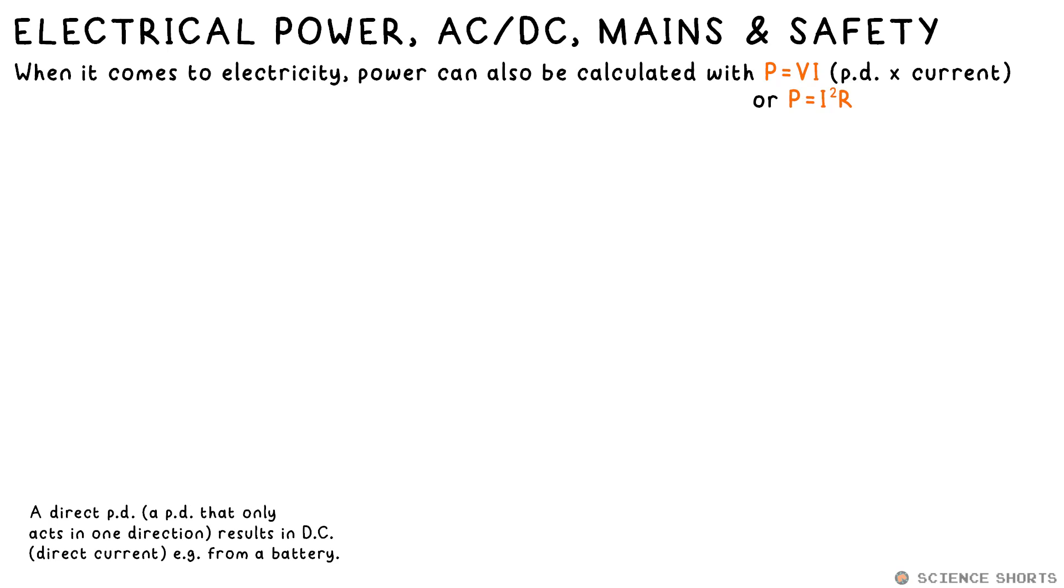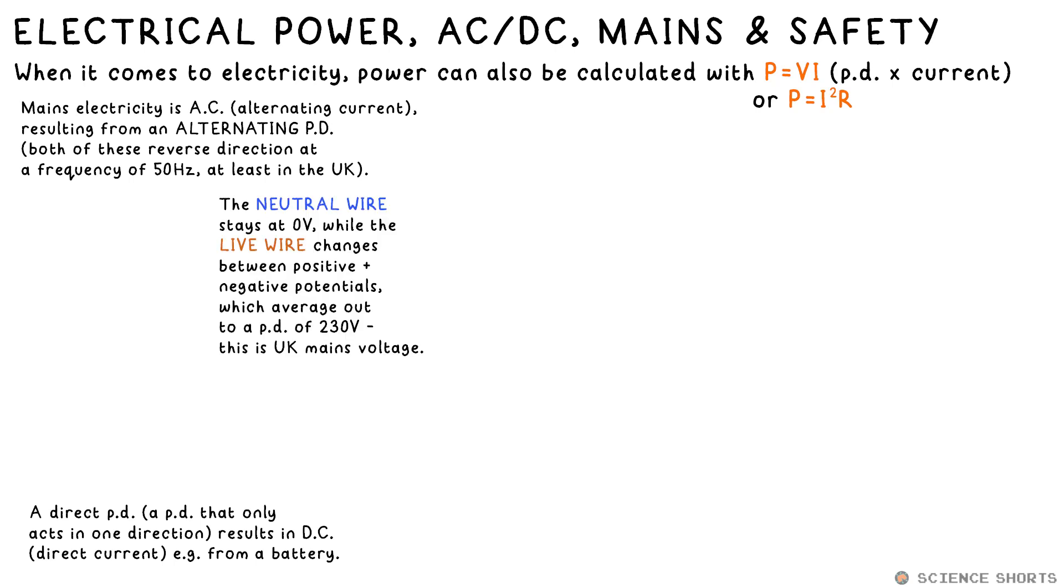The electricity that comes out of a battery is DC, or direct current. That's current that only flows in one direction. However, the exam boards these days have an obsession with calling it direct PD, which is a bit pointless because it just results in the same thing. Direct PD is a potential difference that acts in one direction, and this results in direct current. Main electricity that comes out of your sockets is AC, alternating current resulting from an alternating PD. In the main circuits in your home, the neutral wire stays at a potential of zero volts, much like the wire connected to the negative terminal of a battery. While the live wire, its potential varies from positive to negative, but it averages out to an equivalent of 230 volts, so we say this is mains voltage. This alternating PD causes current to go back and forth at a frequency of 50 hertz. If you hooked up a battery and mains electricity to an oscilloscope, we'd see these two traces to see how the PD changes over time for both of them. Well, it doesn't change in the case of DC, of course.